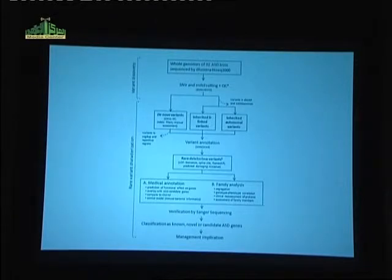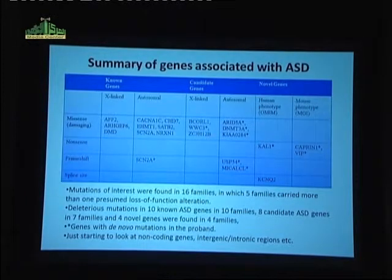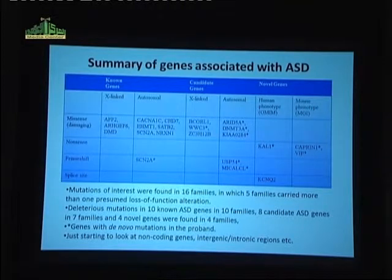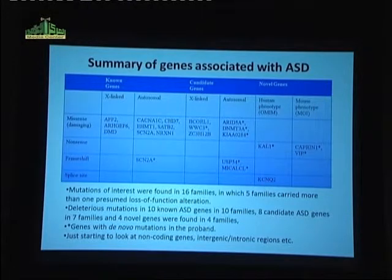We selected families where we had a lot of clinical data, and then we really kind of worked hard looking for associations. In the medical annotation, we compare it to all the known genes. We can identify new candidate genes based on comparison to other data sets, and then ultimately some novel genes.